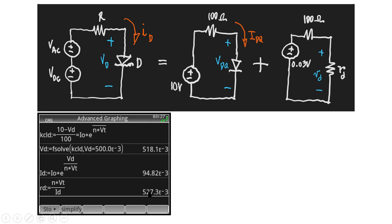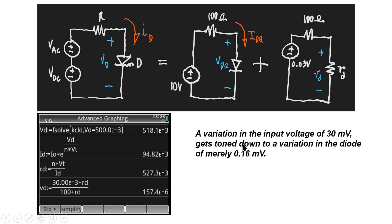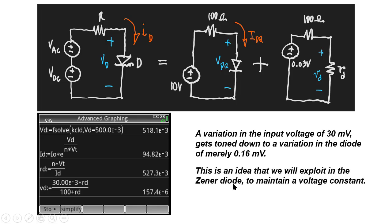Using superposition, we kill the DC source. All we have is the 30 mV peak-to-peak voltage source, the 100 Ω resistor, and the diode — which for the small signal appears only as r_d = 0.527 Ω. We compute the AC voltage across the diode using a voltage divider between 100 Ω and r_d. The conclusion: a variation of 30 mV peak-to-peak at the input is toned down in the diode to merely 0.16 mV — very little change.